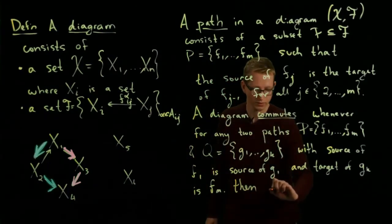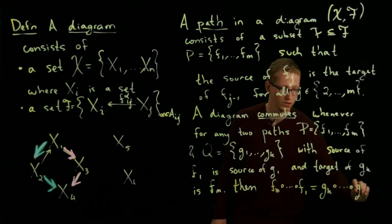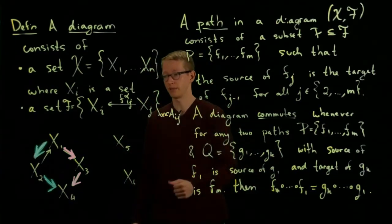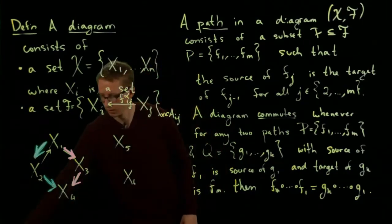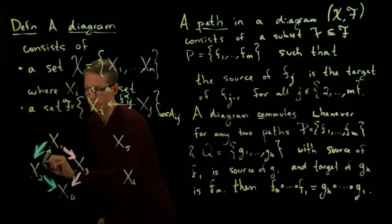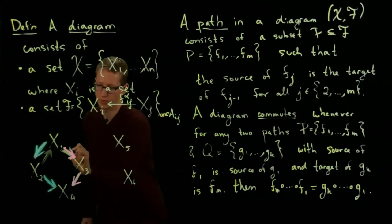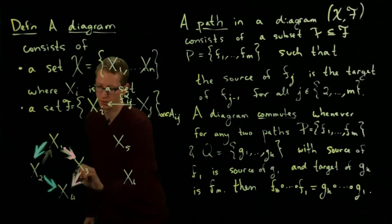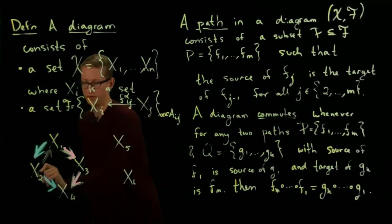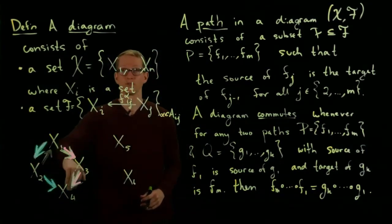So let me write that out. Fm composed with F1 equals Gk composed with G1. So in this diagram, there's actually another path that we can look at. Another one of the paths is the one from X2 to X1, and then it follows the red path from X1 to X3, and from X3 to X4. So this path consists of these three arrows. And then the next path is the one just from X2 to X4. So this also has to commute, which means that this composition has to equal this one as well.